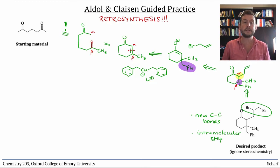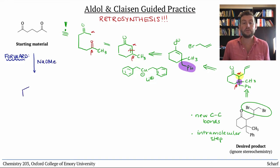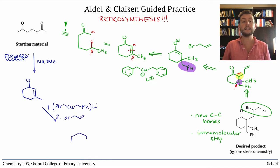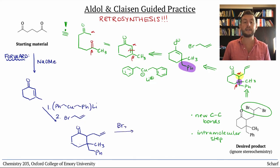Now we just need to put this together in the forward direction with all the appropriate reagents. The intramolecular aldol reaction just requires a base catalyst — we'll choose sodium methoxide. Then we add di-benzyl lithium cuprate, which makes an enolate. It's an ionic intermediate, so I don't need to draw it in a synthesis problem. Then we follow that with allyl bromide to make this compound. Finally, treatment with Br2 turns the alkene into a dibromide, and we've made our product.